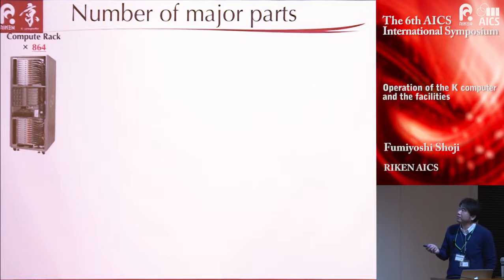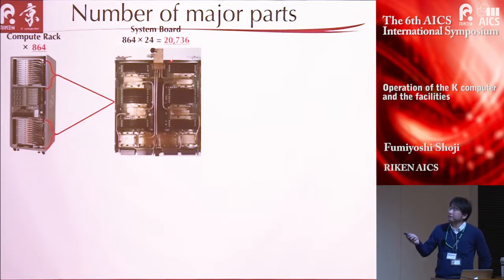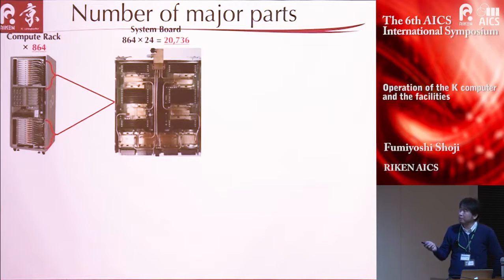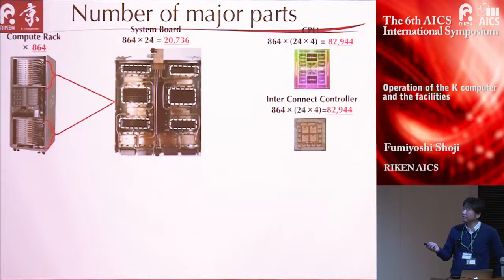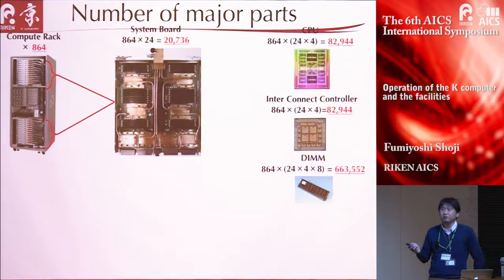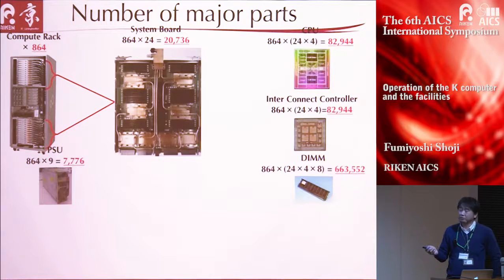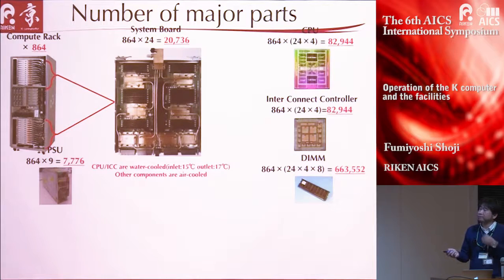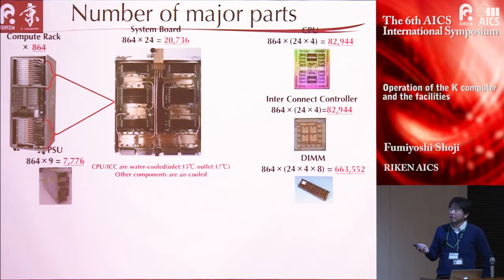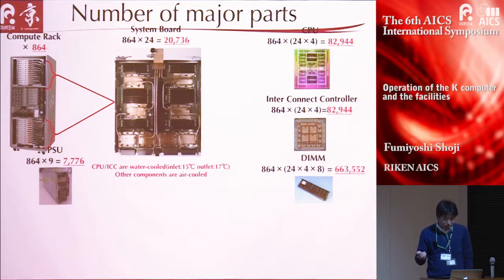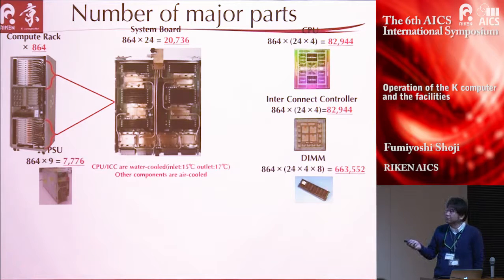The K-computer consists of 864 computer racks. Each rack has 24 system boards, so the total number of system boards is large. Each board has four CPUs, four ICCs, and 32 two-gigabyte DIMM modules. Each rack also has power supply units. CPUs and ICCs are water-cooled, with inlet water temperature of 15 degrees Celsius and outlet about 17 degrees. Other parts, including DIMMs, are air-cooled.